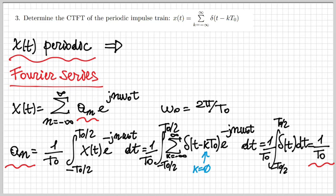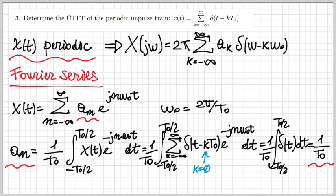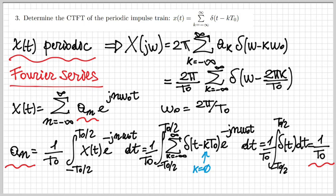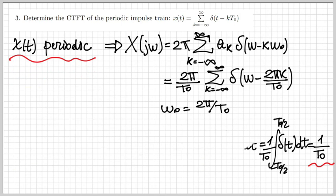Now I use the expression for the Fourier transform obtained from the Fourier series coefficients: X of jω equals 2π times the sum of aₖ·δ(ω − k·ω₀). Substituting our coefficients, I get 2π/T₀ times the sum of those deltas. So the Fourier transform of a periodic impulse train is another periodic impulse train in the frequency domain, but the two impulse trains differ in amplitude and in their period.